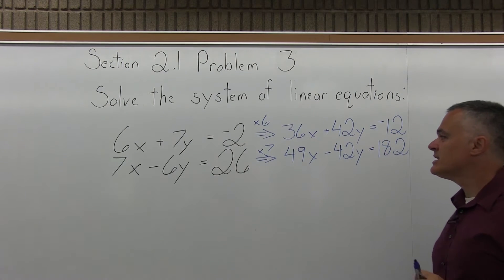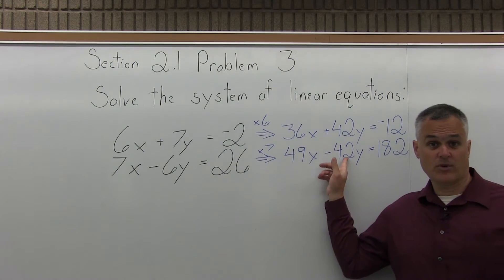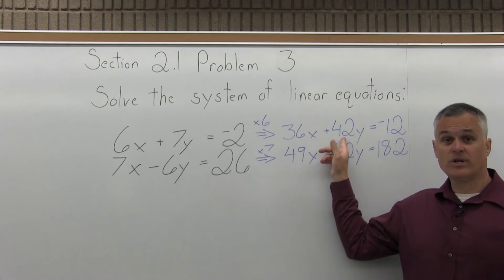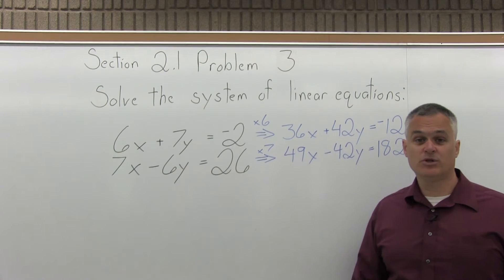And now, step 1 is done. One of the variables has the same number in front, but with opposite signs. I have a 42y and a negative 42y. So, we move on to step 2.